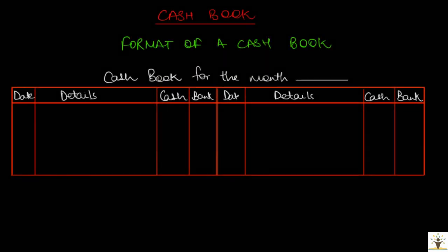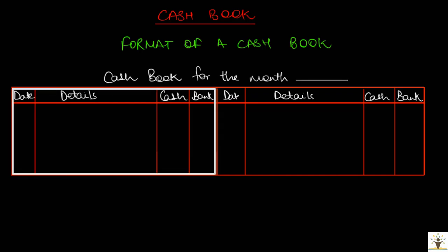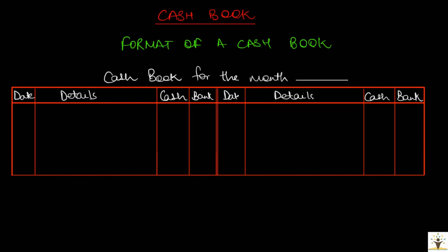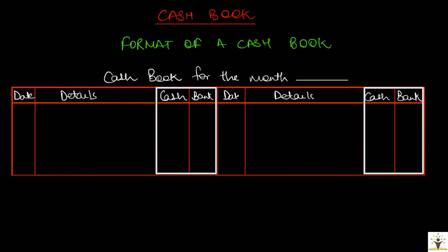The format of a cashbook is similar to that of a ledger account. It has two sides — the left side is the debit side and the right side is the credit side. The date and details column are recorded in a similar way. In a ledger account, there is a single amount column. But in a cashbook, both sides have two amount columns each: one is the cash column and the second is the bank column.